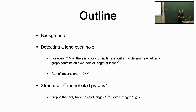The second result is the structure of graphs when every hole in the graph has the same length. We call these graphs L-monoholed if every hole in that graph has length exactly L. We are able to describe their structure for every integer L at least 7. So there are some obvious open problems — I think L equals 6 should be doable. L equals 5, I believe Paul Seymour and Sophie Spirkl have pretty much solved. L equals 4, the C4-free graph, I think that should be really difficult.